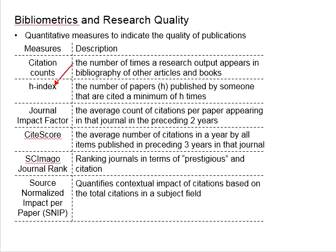Next is the H-index. The H-index means the number of papers — given the symbol H — published by someone, that have been cited a minimum of H times. This gives you an idea of the consistency of an author producing papers that are popularly cited by others.